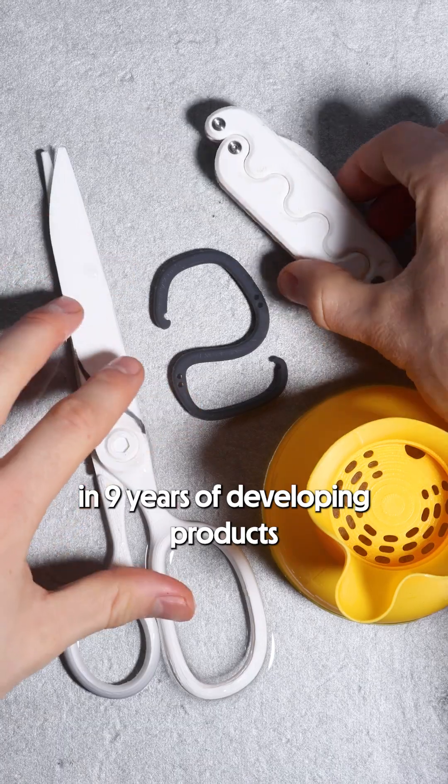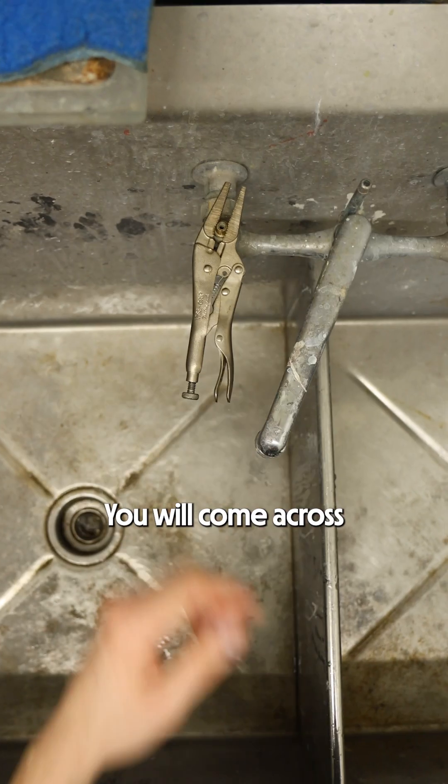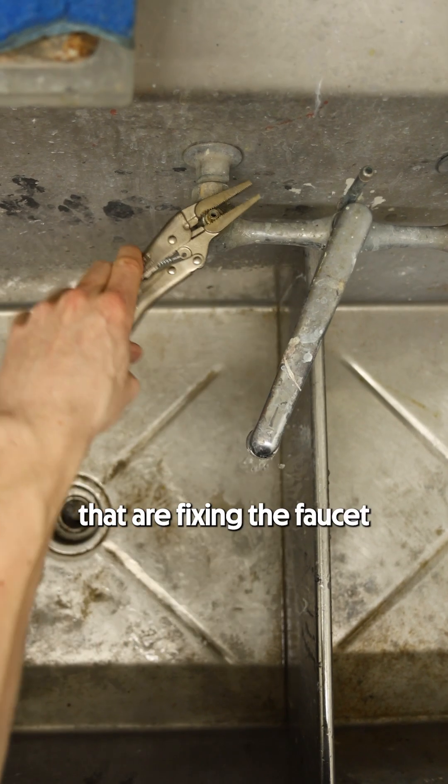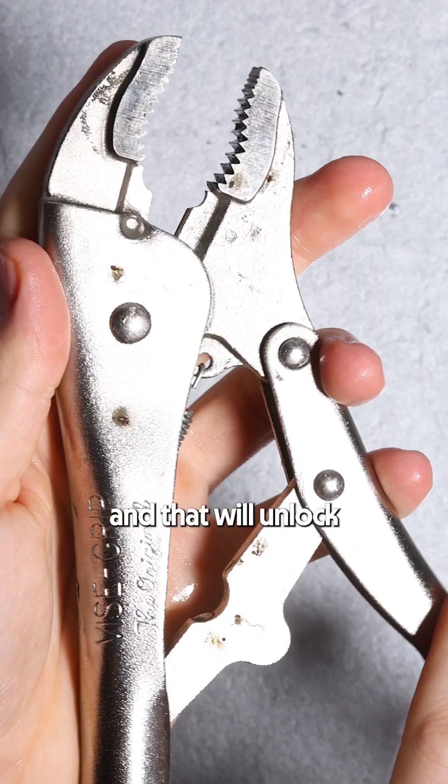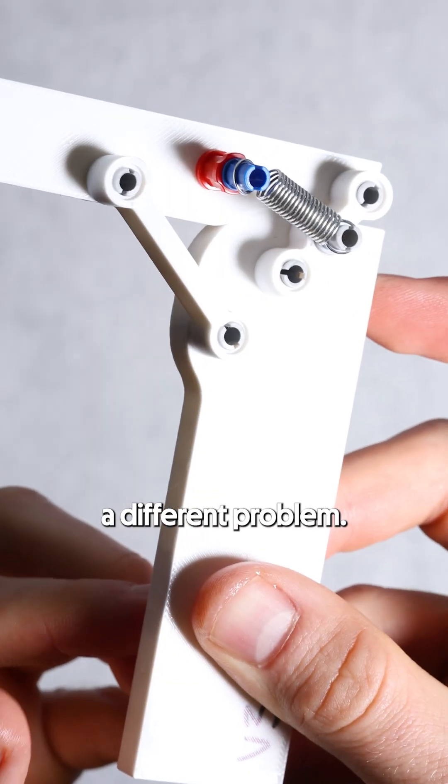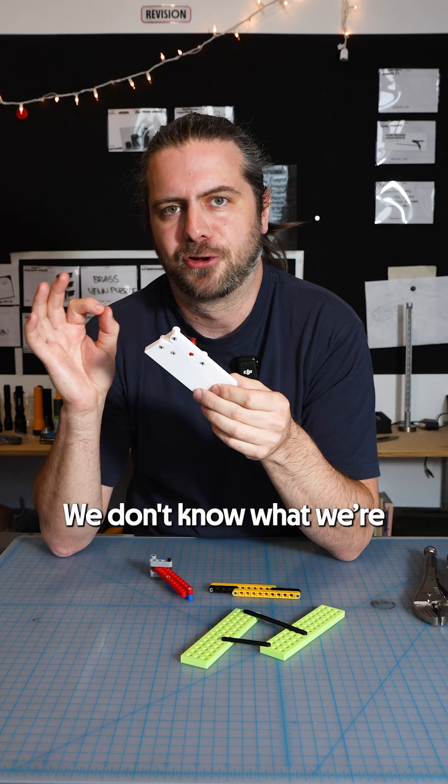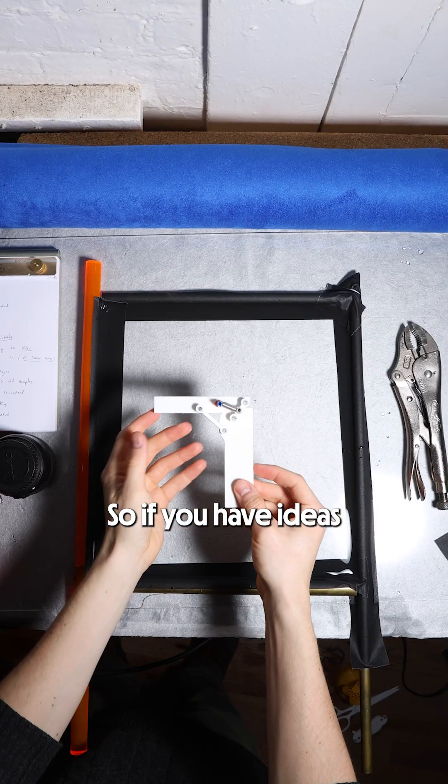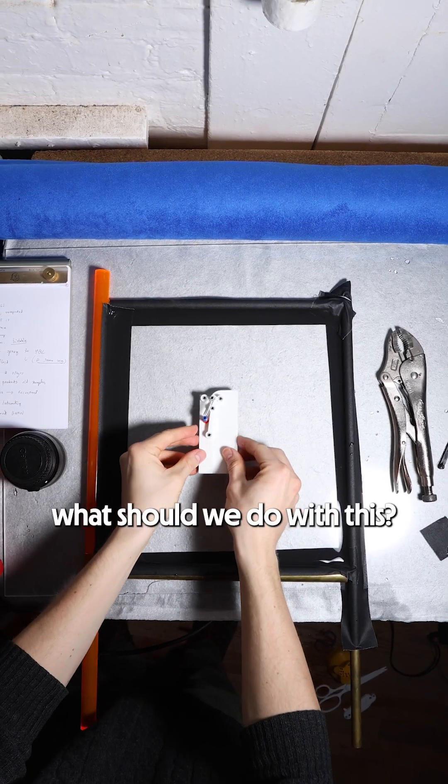In nine and a half years of developing products, just keep your eyes open. You will come across a pair of vice grips that are fixing the faucet in the bathroom and that will unlock a different problem. We know this thing has potential, we know it's interesting, we don't know what we're going to do with it exactly. So if you have ideas, please tell us what should we do with this.